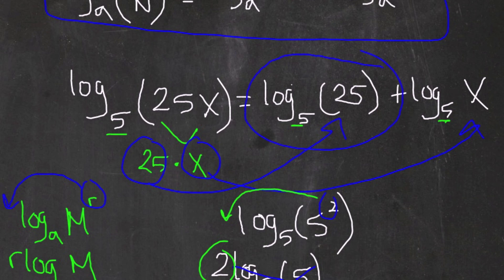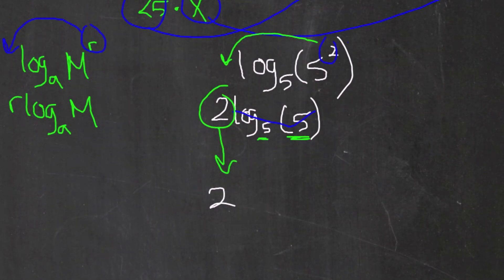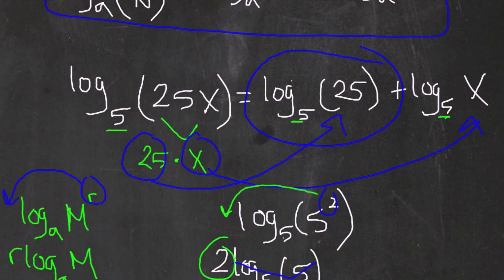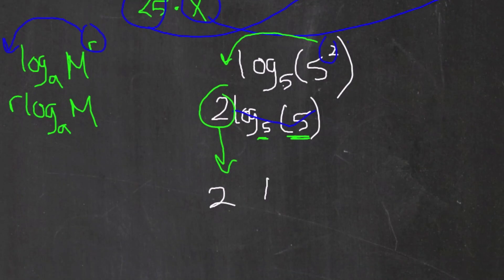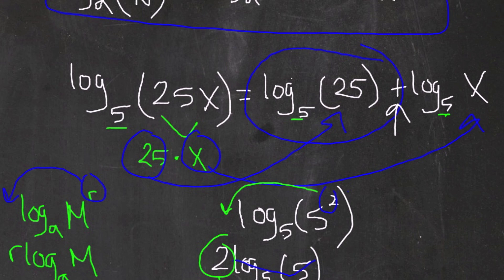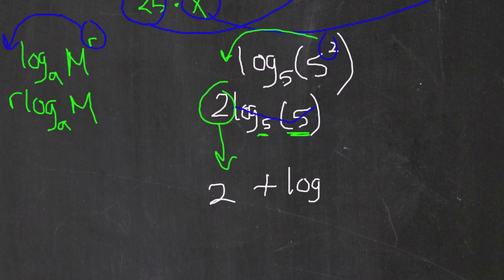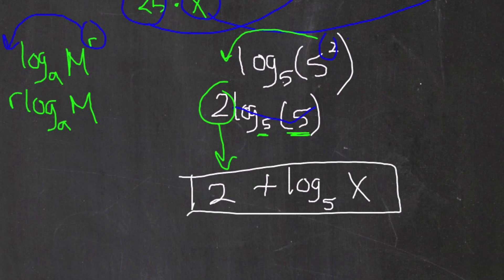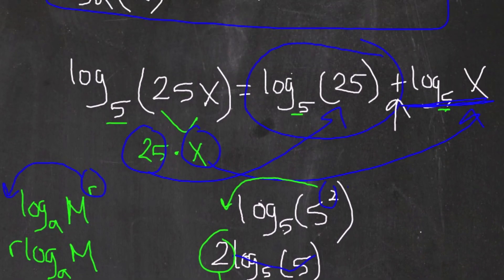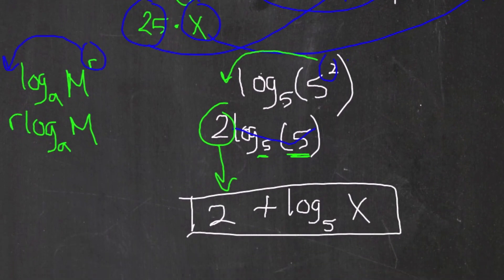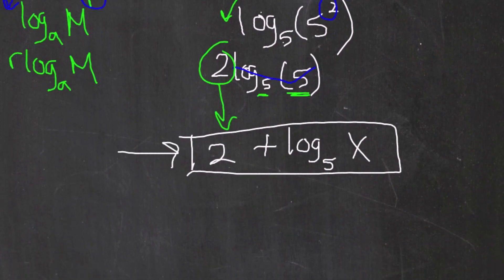So the left side simplifies to 2, and we keep the plus sign, giving us the final answer: 2 + log base 5 of x. That is log base 5 of 25x expressed as a sum of logarithms.